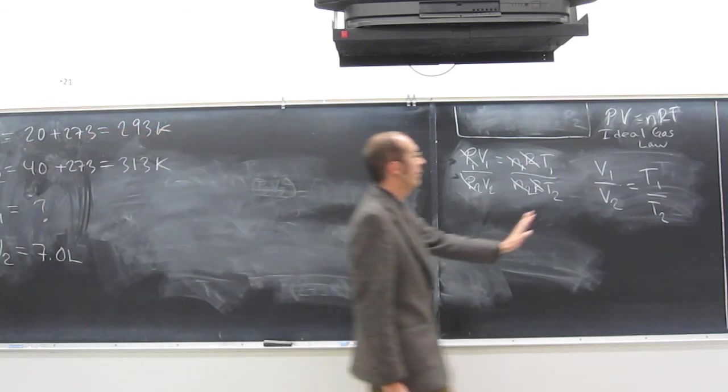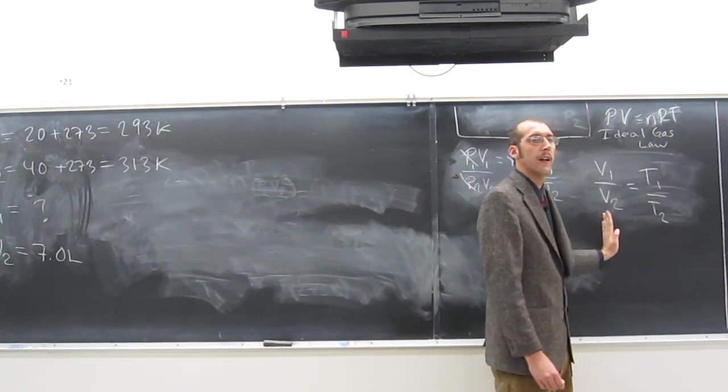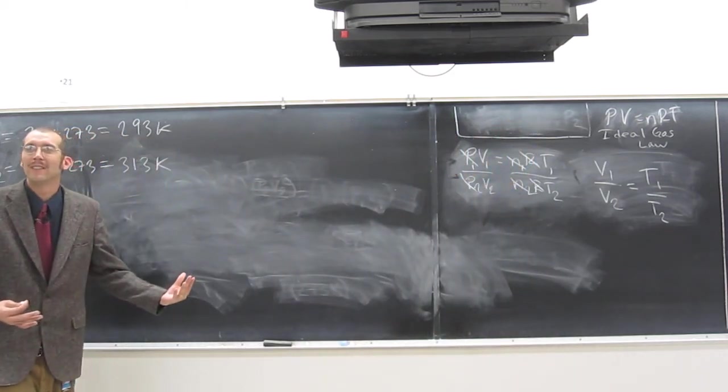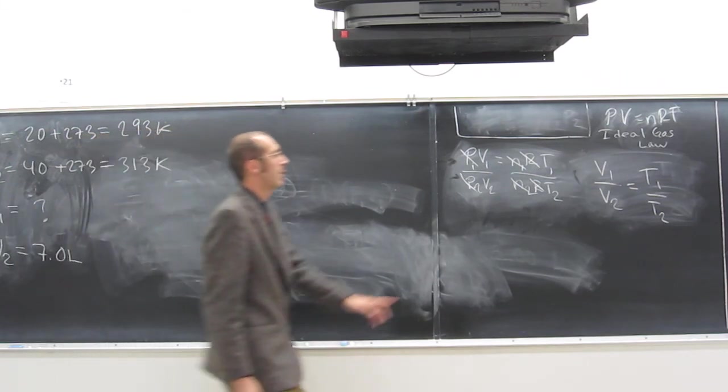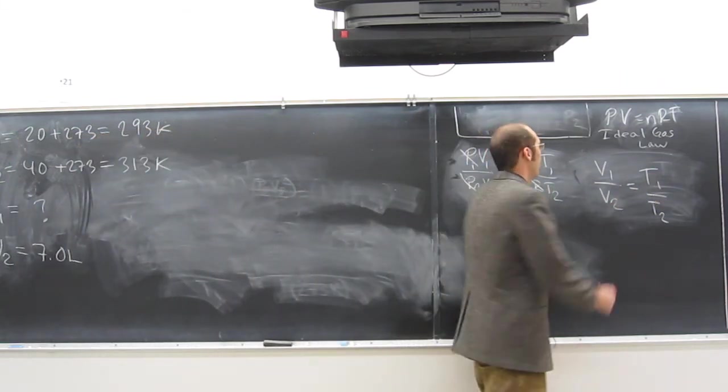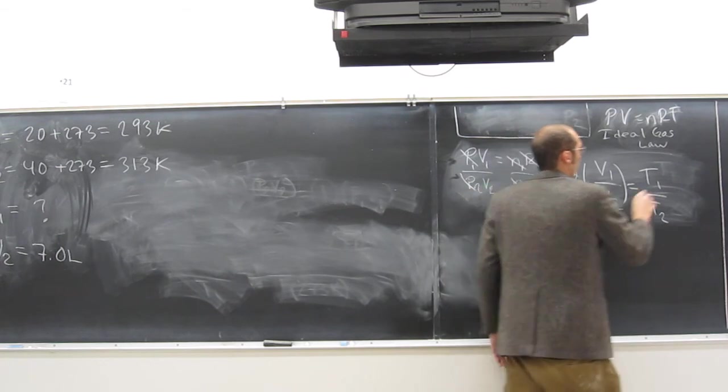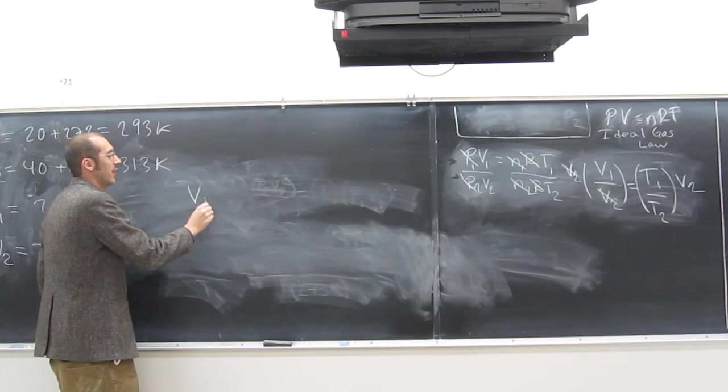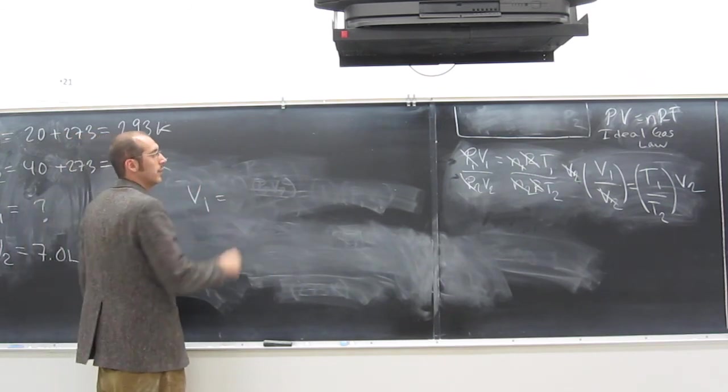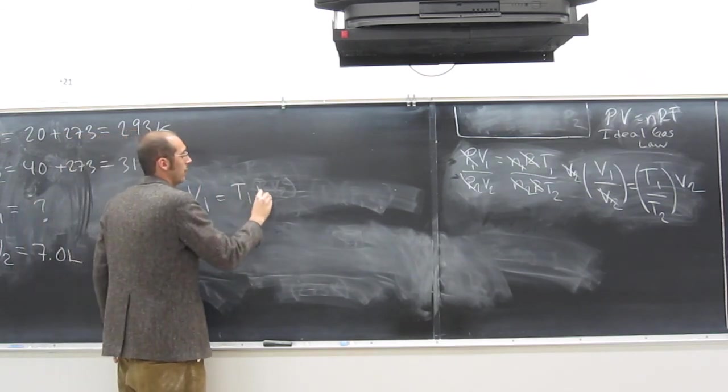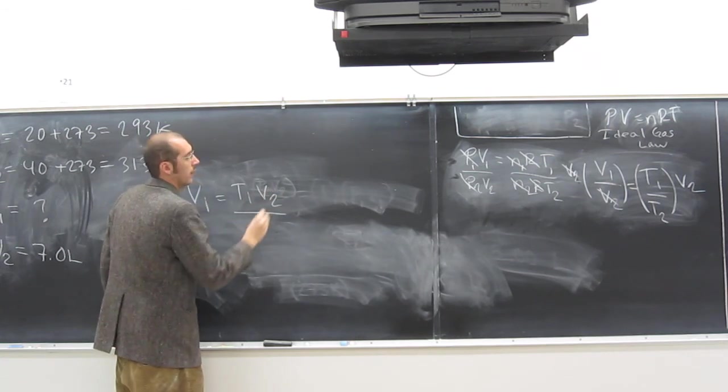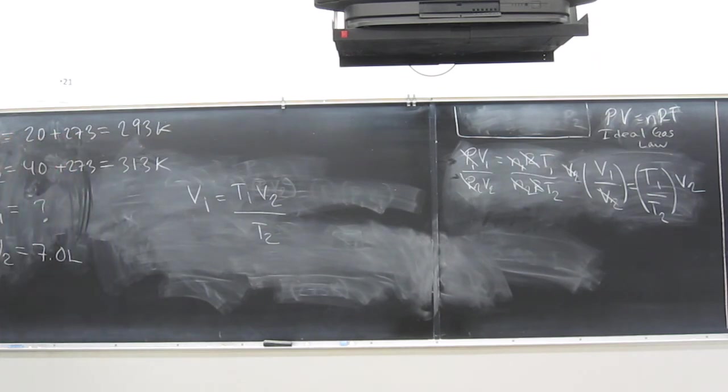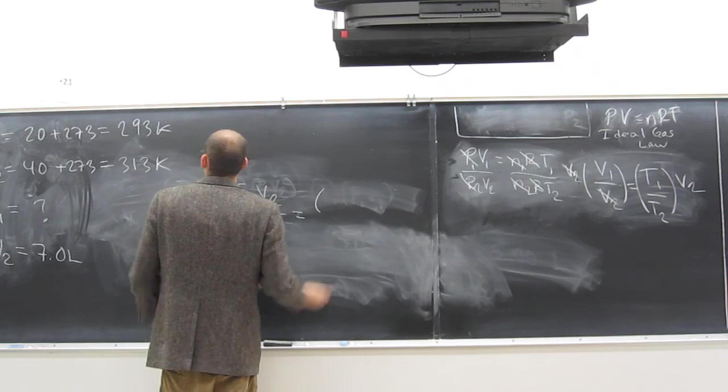So, what are we looking for? What variable do we want to isolate here, guys? V1. V1. So, how do we do that? It's an easy one to do, right? All we've got to do is multiply both sides by T1, right? Like that? So, we've isolated V1 and it's on the top, right? That's all that matters. So, V1 equals T1V2 over T2, right? And so, now what do we do? Plug and chug, right? Same thing. Every time.